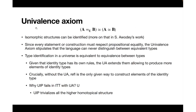The univalence axiom says that the identity type between two types in the universe is homotopically equivalent — or logically, isomorphic — to the type of all equivalences between A and B. If we have the identity type, we can obtain the equivalences between them, and conversely, if we have an equivalence, we can obtain the identity type. Logically, this can be read as: isomorphic structures can be identified — this is the formulation of Steve Awodey.